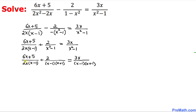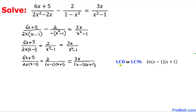Now we focus on finding the least common denominator. Looking at the denominators, we have 2x, x minus 1 appearing in multiple places, and x plus 1 appearing in multiple places. We write each unique factor just once. So our least common denominator turns out to be 2x times (x minus 1) times (x plus 1).